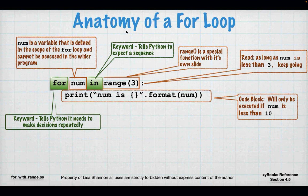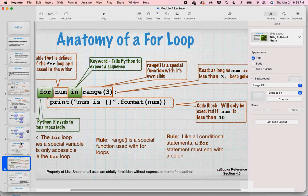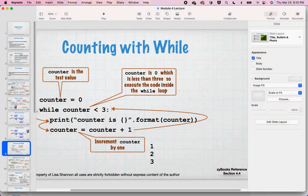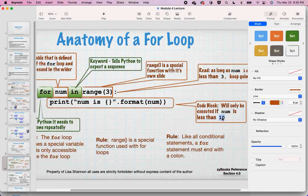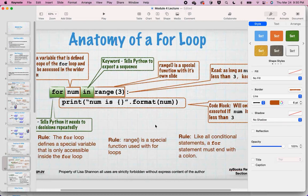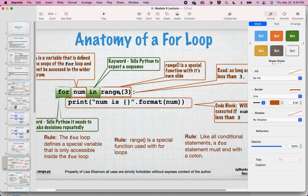Every time we go through this loop, we're going to print the number out and Python's going to automatically increment `num` for us — we don't have to do anything. Looking back at the while loop, we had four lines of code to count to three. In our for loop code, we have two. I just cut my number of lines of code in half by using Python to do something efficiently.